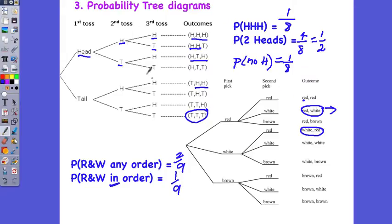With a probability tree you need to start at the beginning. On the first pick I could get red, white, or brown. Then with red, I can get red, white, or brown again. Whatever the choices are, you go along the branches to get the full list of possible outcomes. It's really important that you write them all out so that you can figure out all your options.